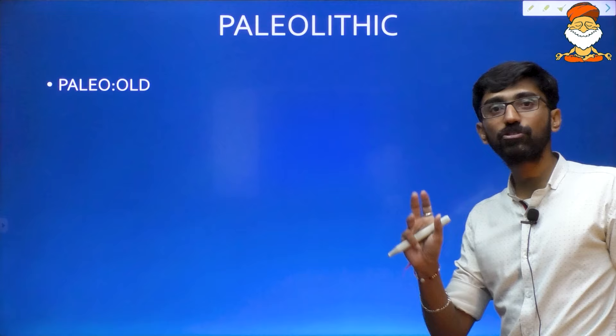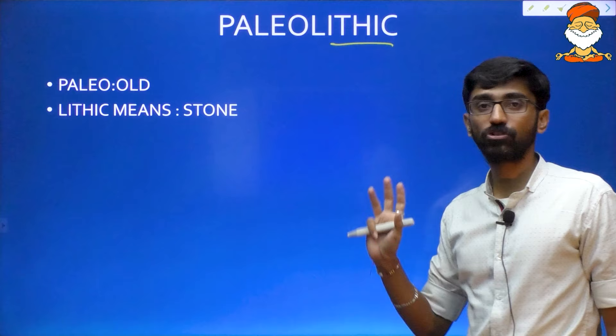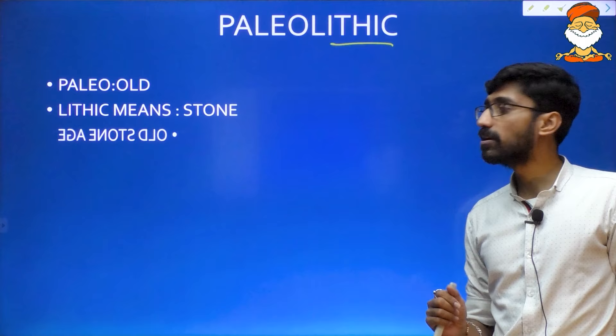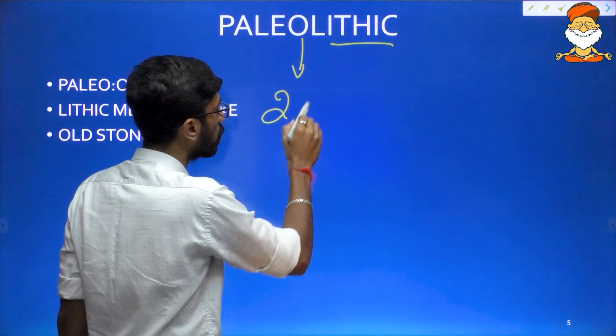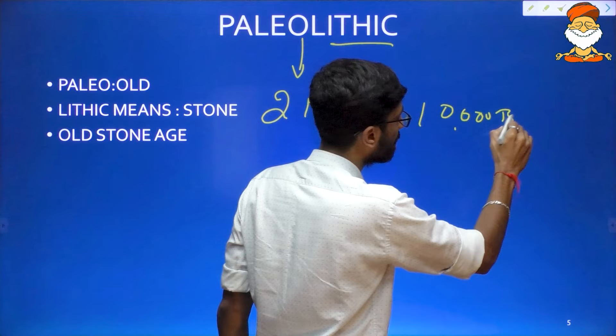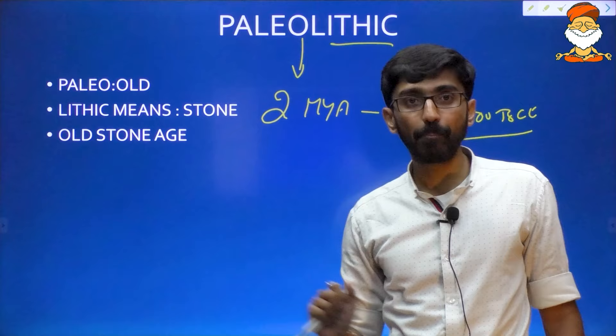What do you mean by Paleo? Paleo means old. And what do you mean by lithic? Lithic means stone. So Paleo means old, lithic means stone — that is the reason it is called the Old Stone Age. These are Greek terms: paleo means old, lithic means stone. This time period is called the Old Stone Age. It starts from 2 million years ago and goes until 10,000 BCE. That is the basic meaning of Paleolithic.